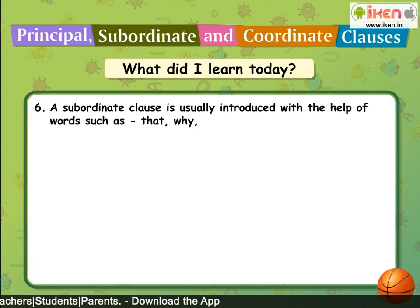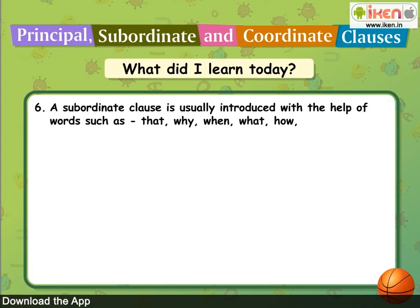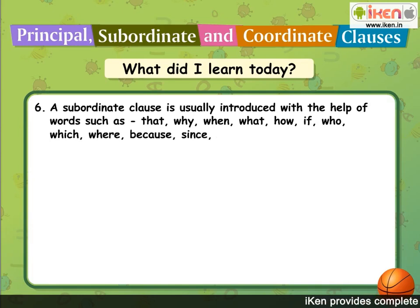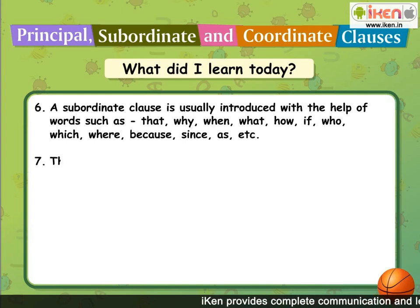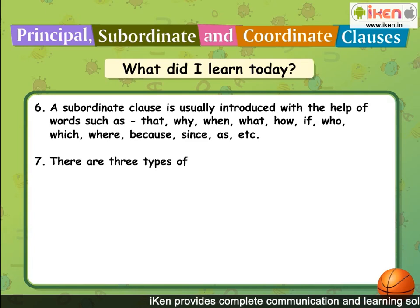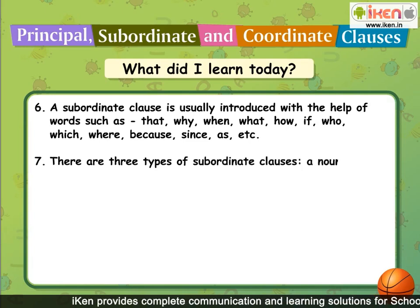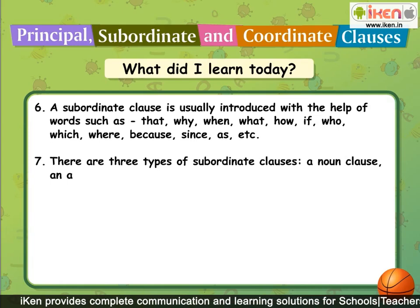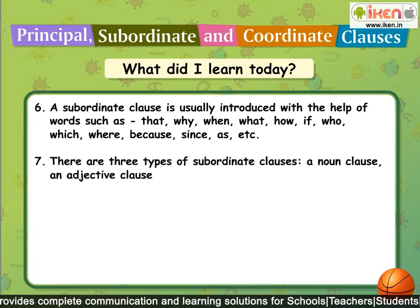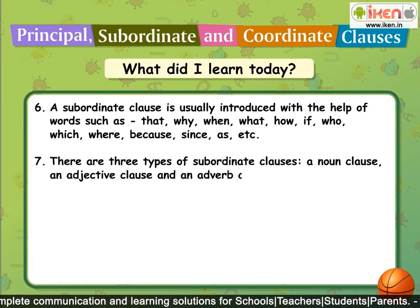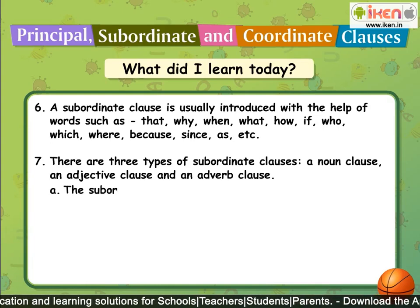The clause that makes complete sense and can stand on its own as a sentence is called the principal, independent or main clause. A main clause can combine with one or more clauses to form a sentence. The clause that does not make complete sense by itself and depends on the main clause is called the subordinate or dependent clause. It tells us something more about the main clause and can never stand on its own. A subordinate clause is usually introduced with words such as: that, why, when, what, how, if, who, which, where, because, since, as, etc.